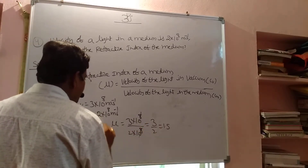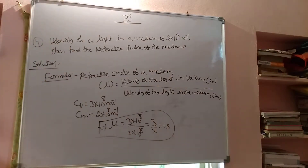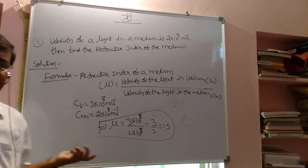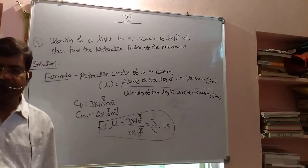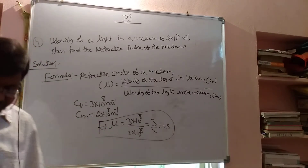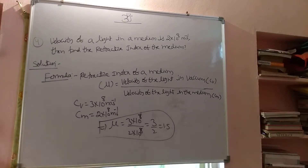So, 1.5 is the refractive index of that medium. A refractive index of 1.5 is generally that of glass, so that medium may be glass. This is how we find the refractive index when velocities are given.